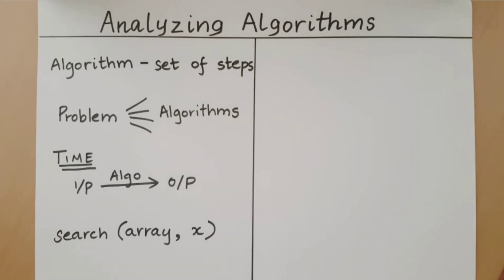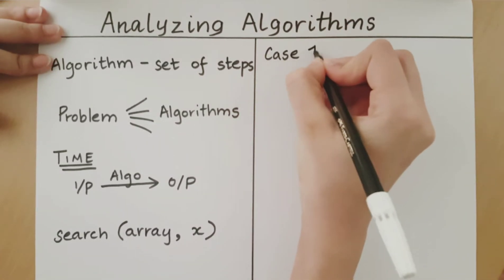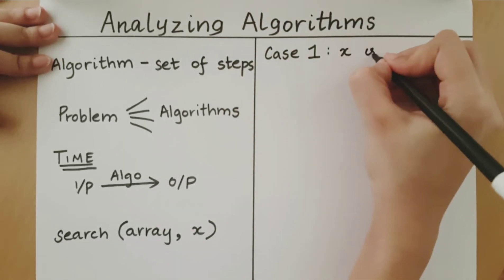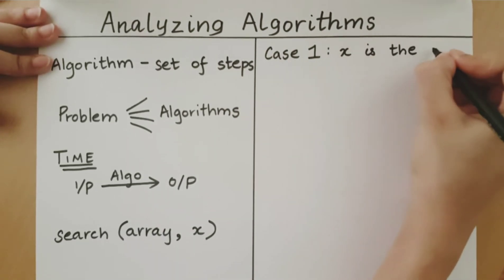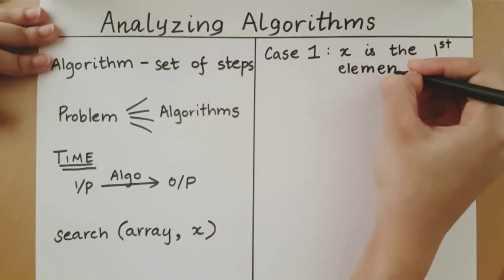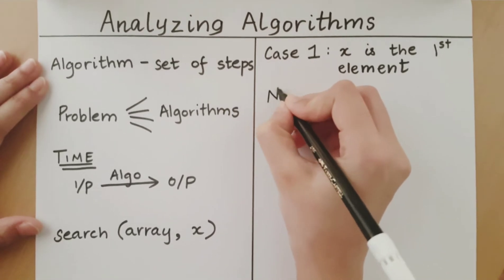So let us look at a few cases that this algorithm will encounter. The first case is when x is the first element. When x is the first element, the algorithm is going to check the first element if it is equal to x. This is true and therefore the search will return as successful. The number of checks made by this algorithm will be 1.